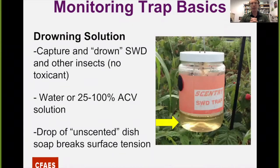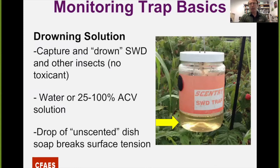The last component is the drowning solution, which captures and drowns the insects that come into the trap. There is no toxicant in this trap whatsoever — the insects fly in, contact the drowning solution, and eventually drown. That solution can be anything from water to 25 to 100% apple cider vinegar. What's really important is that we put in at least a drop of unscented dish soap, which breaks the surface tension of the water so that when insects contact the liquid they're drawn into it and can't walk around on top. There's about an inch or so of the drowning solution in the bottom of the container.